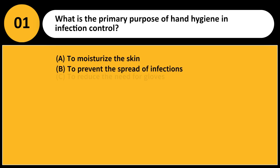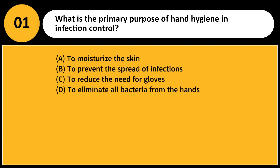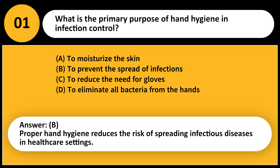What is the primary purpose of hand hygiene and infection control? A. To moisturize the skin. B. To prevent the spread of infections. C. To reduce the need for gloves. D. To eliminate all bacteria from the hands. Answer: B. Proper hand hygiene reduces the risk of spreading infectious diseases in healthcare settings.